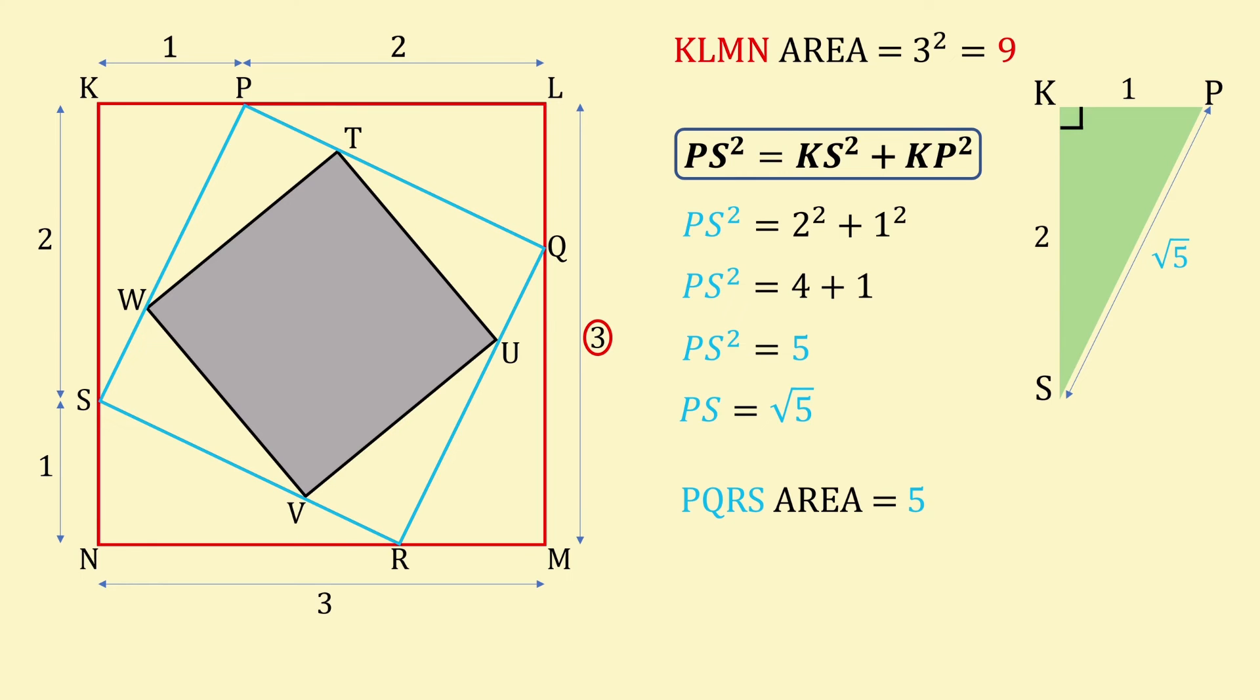Therefore, the area of PQRS as a fraction of the area of KLMN is 5 over 9.